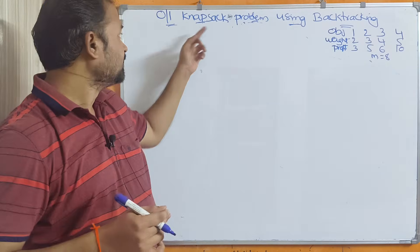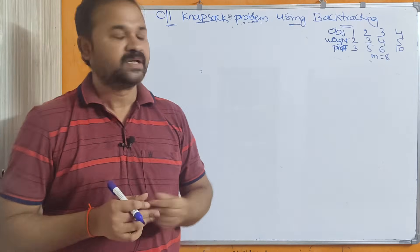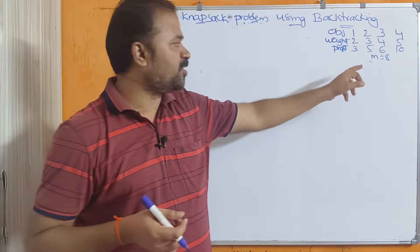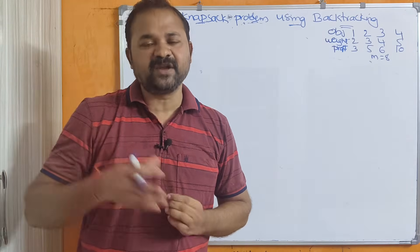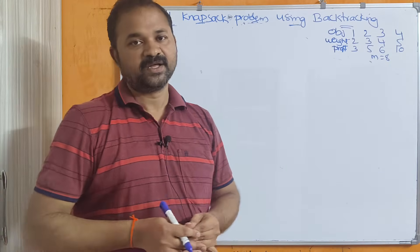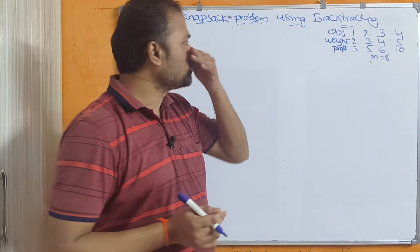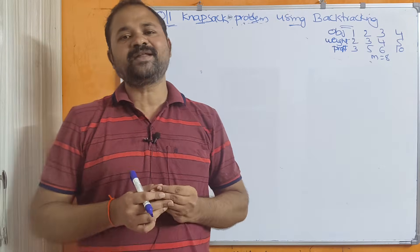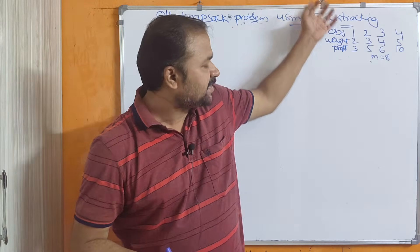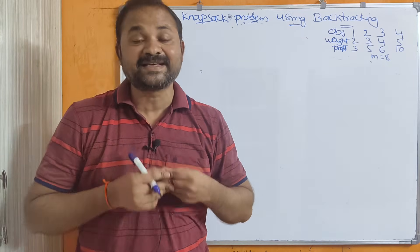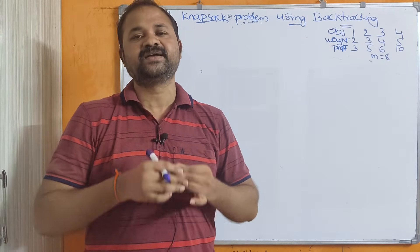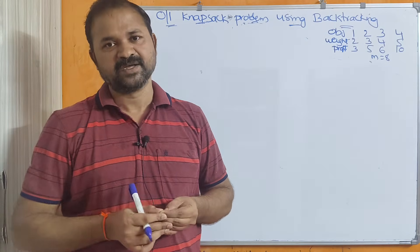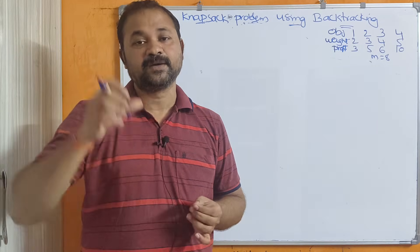Let us discuss the 0/1 knapsack problem using backtracking. A knapsack (bag) is represented by M, and here M equals 8. There are N=4 objects, each with a weight and profit: object 1 is (2,3), object 2 is (3,5), object 3 is (4,6), object 4 is (5,10). Our major aim is to place objects in the knapsack with maximum profit. We construct a state space tree containing all possible configurations, and choose the best solution — meaning maximum profit.